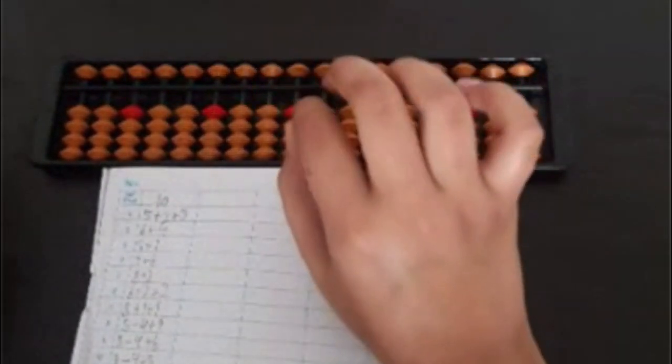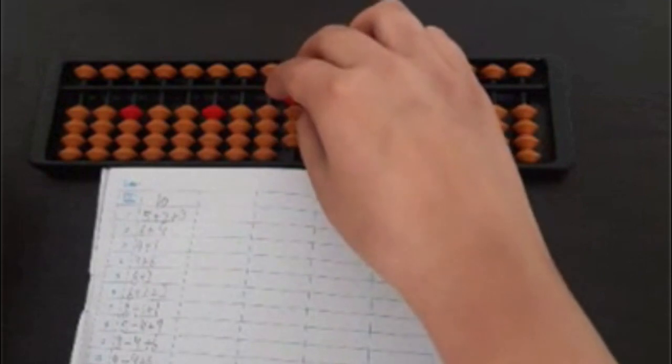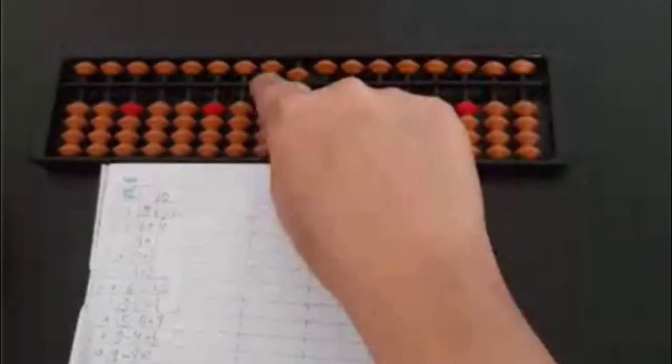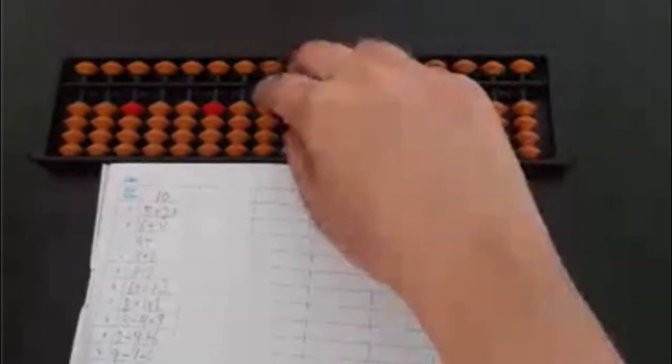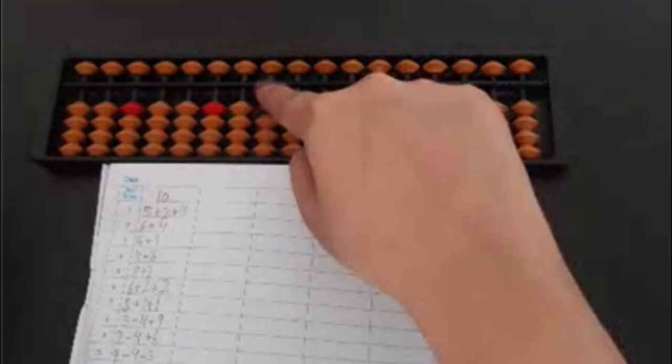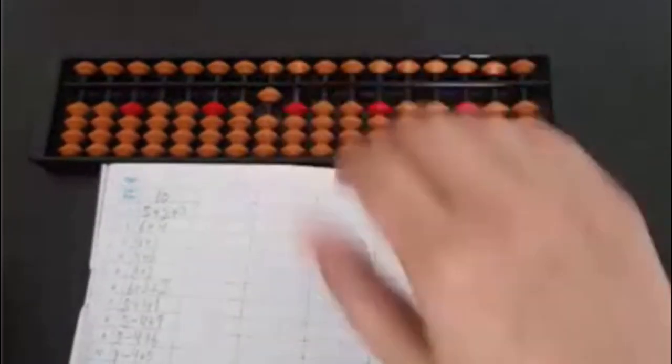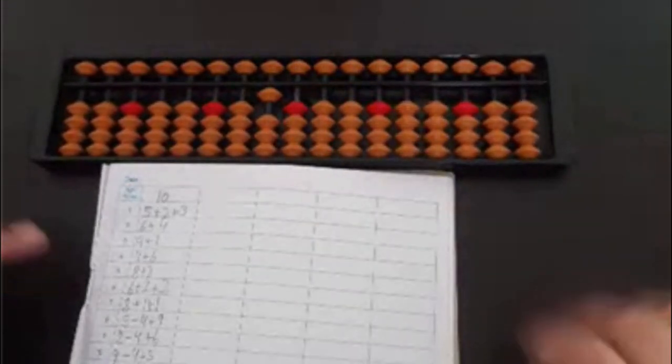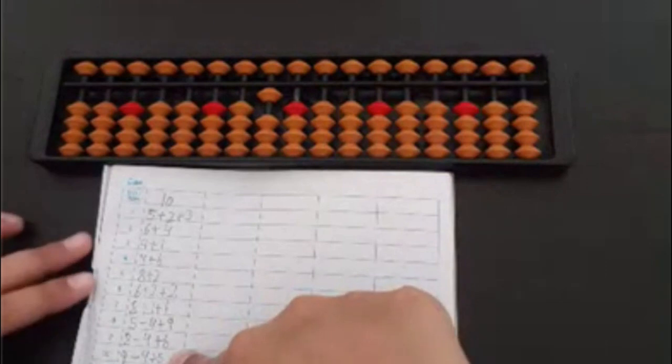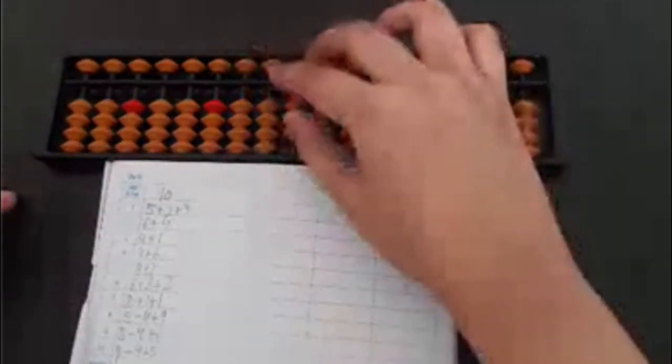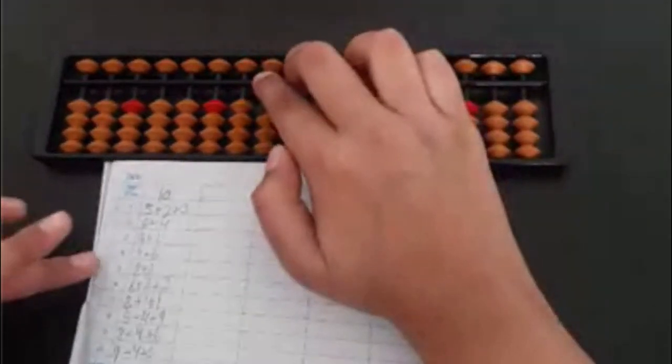And after that, 9 plus 1. And 4 plus 6. Like this. And then let's try some minus questions. I will be showing you only one. So let's try this one. And this one is 9 minus 4 plus 5. So it will be 10.